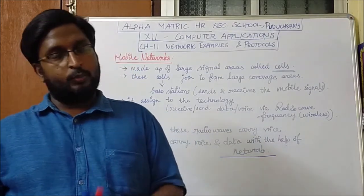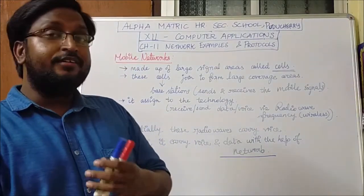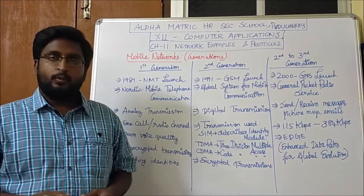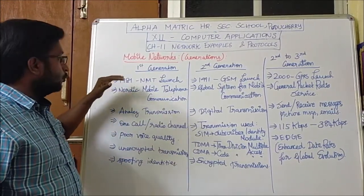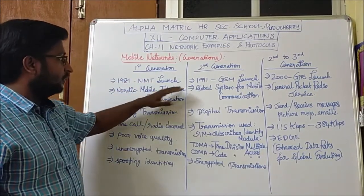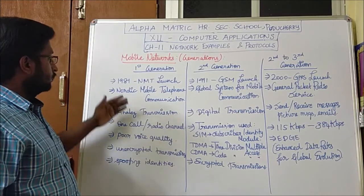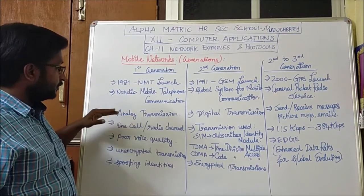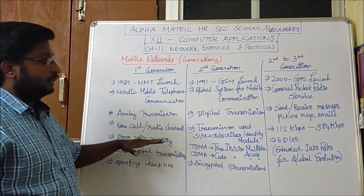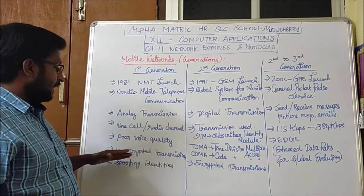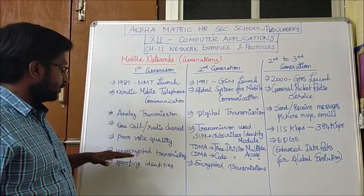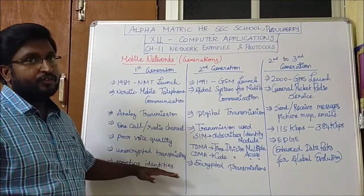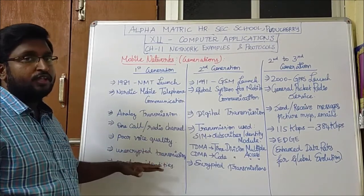Next let us see about the generations of mobile networks. The first generation begins at 1981 with the launch of NMT — Nordic Mobile Telephone Communication. It uses only analog transmission, and in this analog transmission only one call can be made at a time per radio channel. There was poor voice quality and the transmission was unencrypted, which caused spoofing of identities.